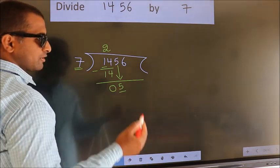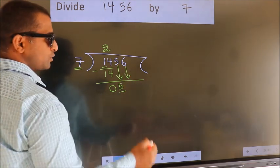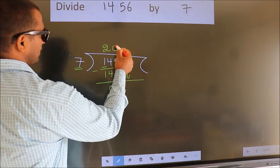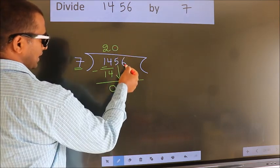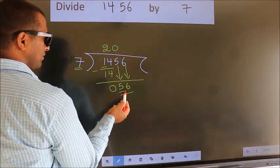So we should bring down the second number. And the rule to bring down the second number is put 0 here. Then only we can bring down this number. So 56.